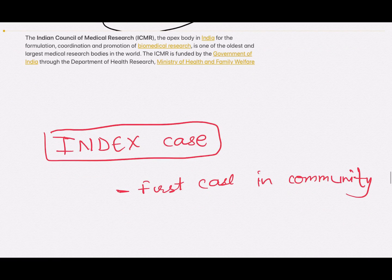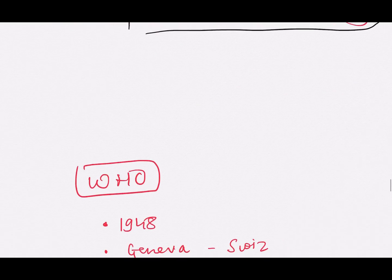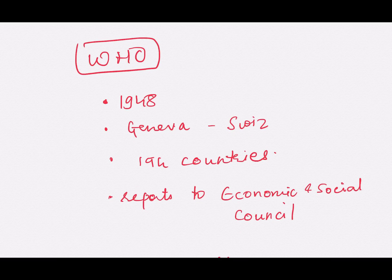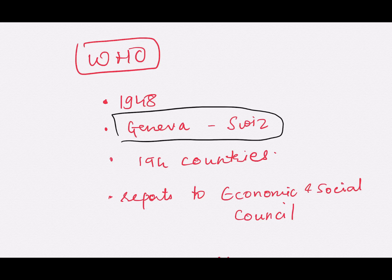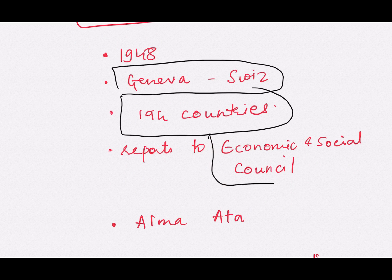Index case is also in news. The index case is the first case of a disease in the community. The next organization in news is WHO. It was formed in 1948, its headquarters is in Geneva, Switzerland, and 194 countries are part of it. WHO reports to the Economic and Social Council.